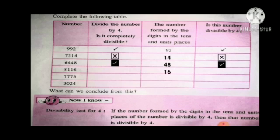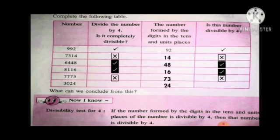Next, 7773. The number formed by tens and units place is 73. 73 is not divisible by 4, so 7773 is not divisible by 4. Next, 3024 — the number formed is 24. 24 is divisible by 4, so 3024 is divisible by 4.